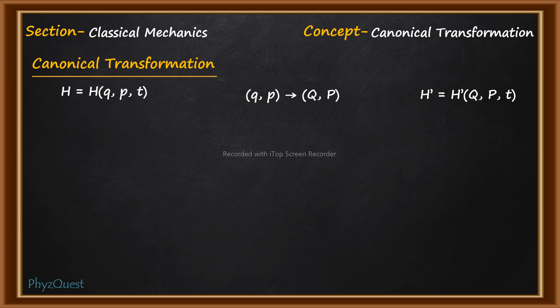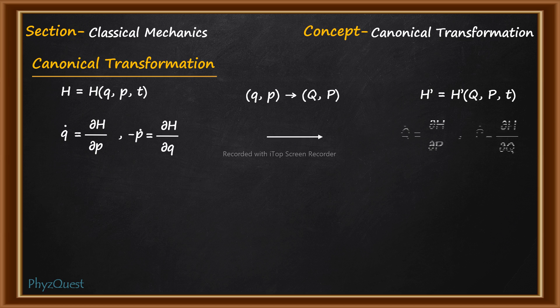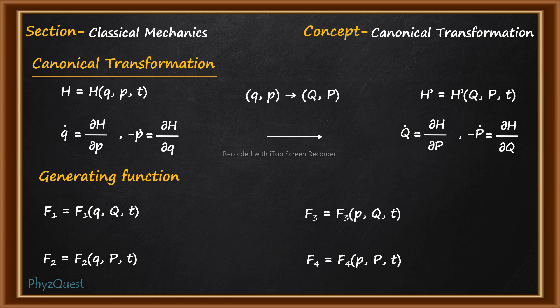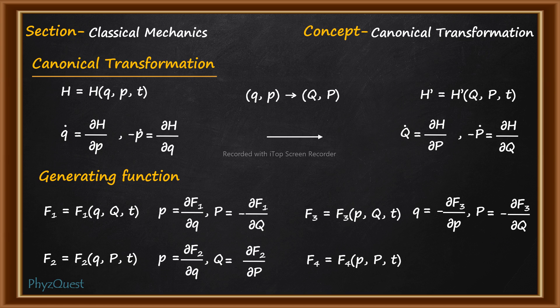The condition for a canonical transformation is that the Hamiltonian expressed in the new set of variables must preserve the same form of Hamilton's equations. The transformation from one set of variables to another is done through a set of functions called generating functions. Depending on which type of old variable transforms to which type of new variable, there are four types of generating functions, each with a corresponding set of relationships.